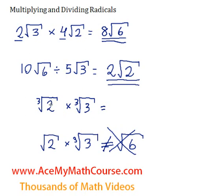The cubic root of 2 times the cubic root of 3 — they're the same type of root, so we can actually multiply them right away. 2 times 3 is just 6, so we end up with the cubic root of 6.